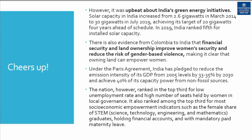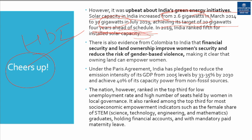What are the positives of this HDI report? The report positively noted that India's green energy initiatives are very successful. Solar capacity in India increased from 2.6 GW to 30 GW, achieving its 20 GW target four years ahead of schedule. India got rank 5 in terms of solar capacity. There is also evidence from Colombia to India that financial security and land ownership improve women's security and reduce the risk of gender-based violence.